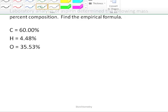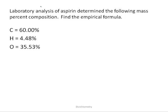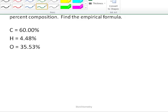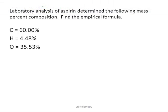Let's look at an example. From gravimetric methods in the lab, we've determined the percent by mass of aspirin — whose active ingredient is acetylsalicylic acid — to be 60% carbon, 4.48% hydrogen, and 35.53% oxygen. Note these don't always add to exactly 100% because of experimental error. Since we have percent by mass, we can assume a 100-gram sample, so that we have grams to convert to moles.